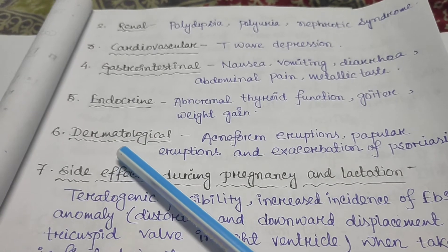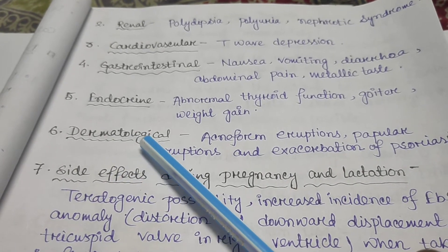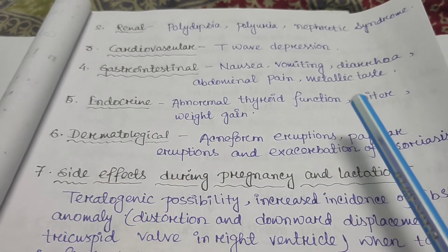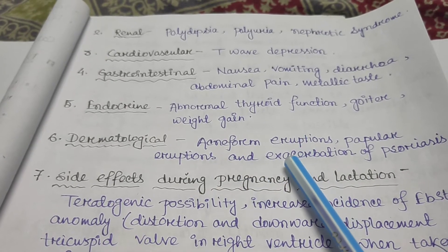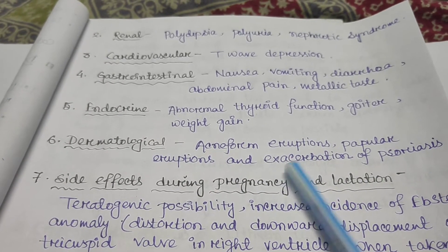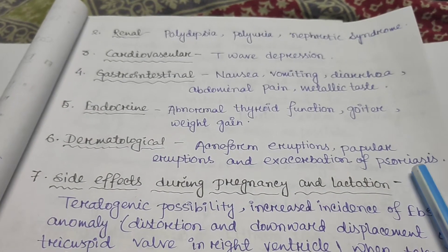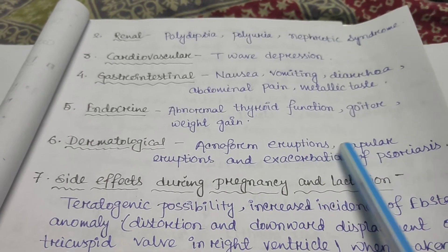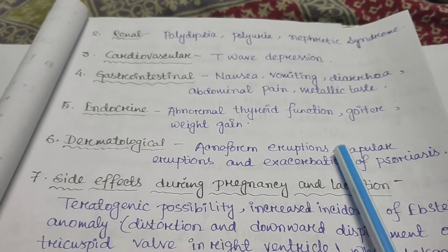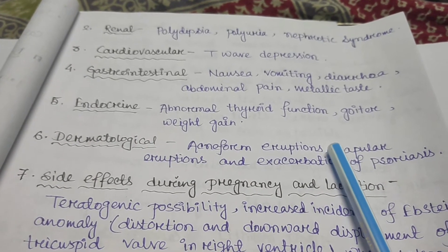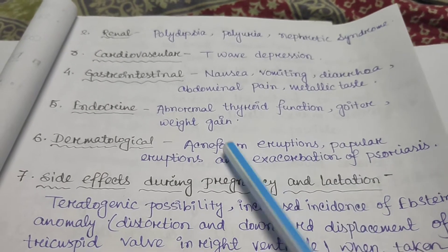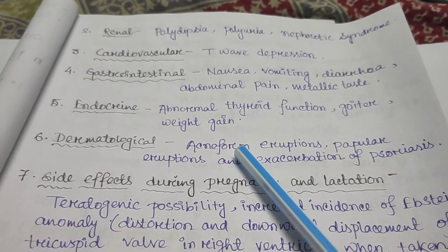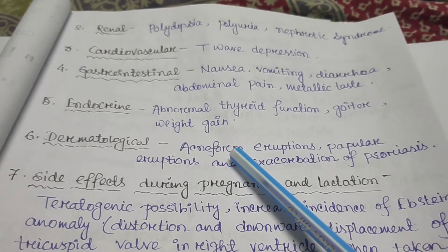Endocrine side effects include abnormal thyroid function, goiter, and weight gain. Dermatological side effects include acneiform eruption, papular eruption, and exacerbation of psoriasis. These are the most common skin conditions that occur due to lithium side effects.